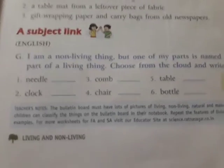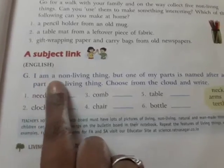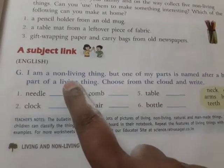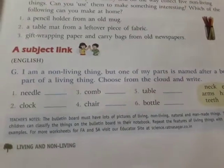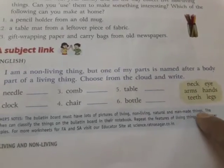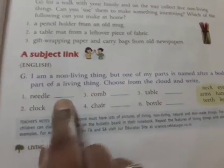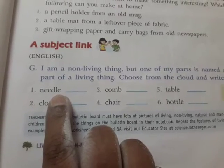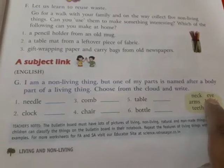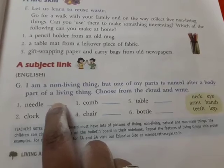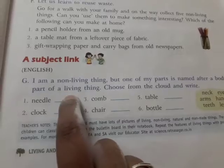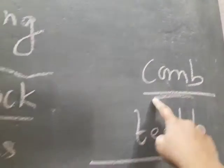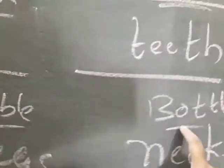Next, subject link - English. I am a non-living thing, but one of my parts is named after a body part of a living thing. These are non-living things but their parts are named after body parts of living things. Choose from the list: needle, clock, comb, chair, table, and bottle - these are the non-living things.